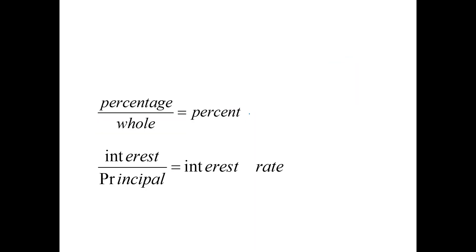Just to recap: the percentage divided by the whole equals the percent. When working with money, the percentage is the interest we're paying for the use of that money. The principal is what we borrowed. When we divide those, we get the interest rate.